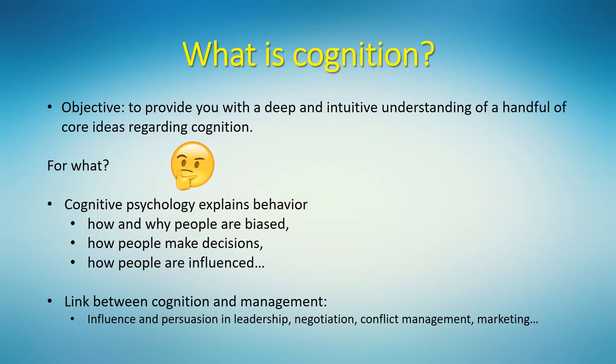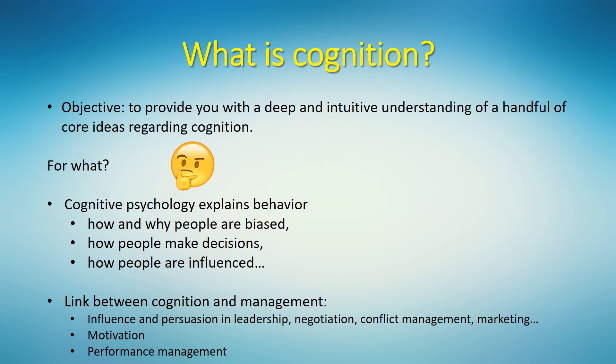Understanding cognition also helps in understanding motivation. Performance management is in fact based on cognitive psychological theories — only not everybody is aware of it. So, I hope that by this time you are already convinced that cognitive psychology is worth learning about. Now I will prove to you that it is also fun to learn about. In the next video I will start explaining the ideas about cognition that I find most fundamental. I call these core ideas premises, because from these premises we will later draw practical implications for management. Are you ready?